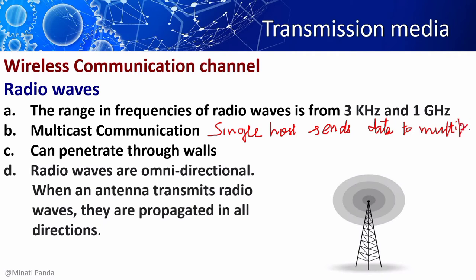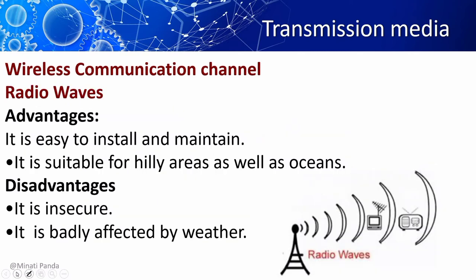FM radio, television, and cordless phones are examples of radio waves. Radio waves have the ability to penetrate walls, receiving signals even if someone is inside a building. Radio waves are defined as omnidirectional, which means the waves can travel in any direction.